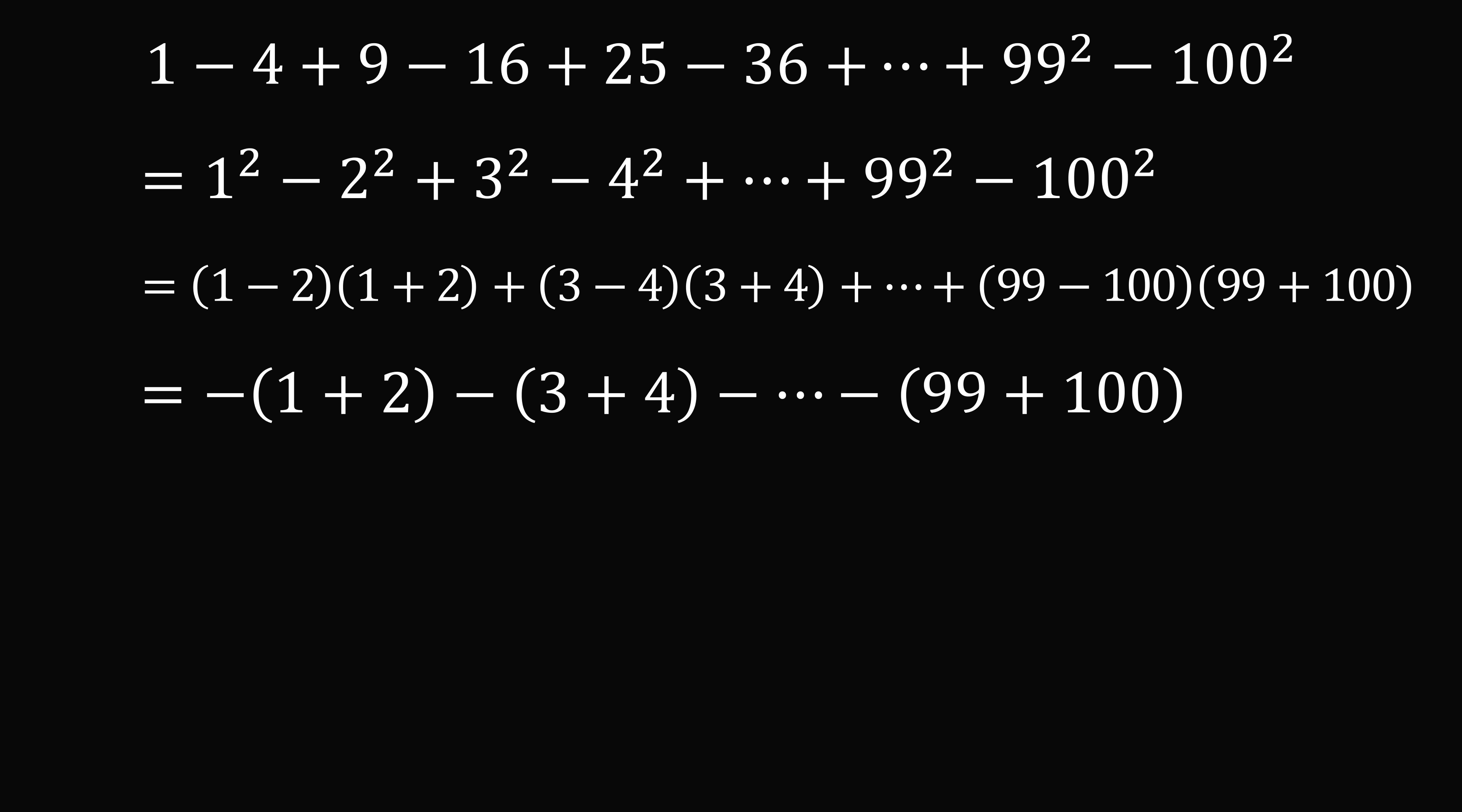So we can factor out this term of negative 1. So we have the opposite of the sum of the numbers from 1 to 100. We can thus use the formula for the sum of the numbers from 1 to 100. And this is 100 multiplied by 101 divided by 2. We want the opposite of that. And this evaluates to be negative 5050. So this is the same answer, but derived in a slightly different way.